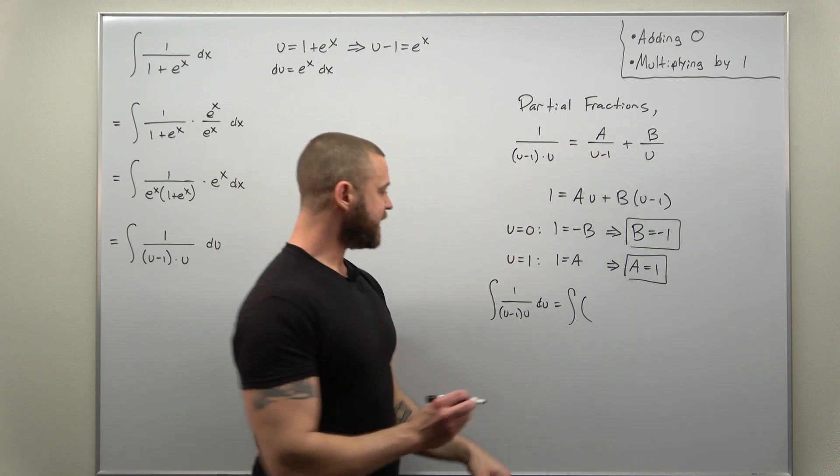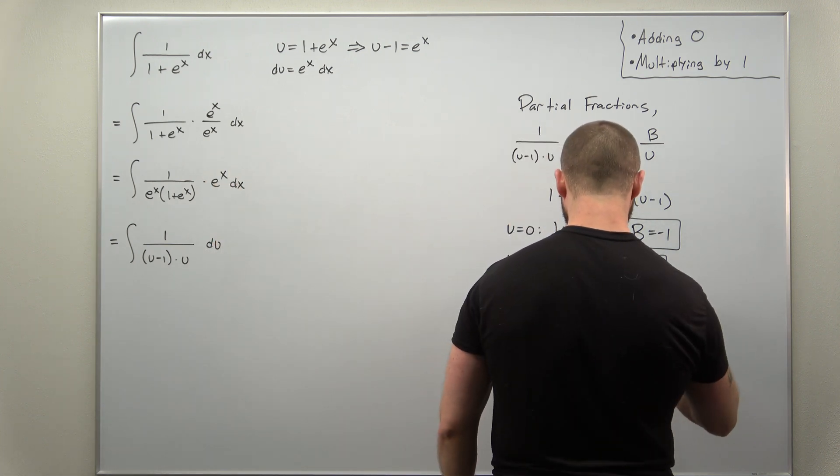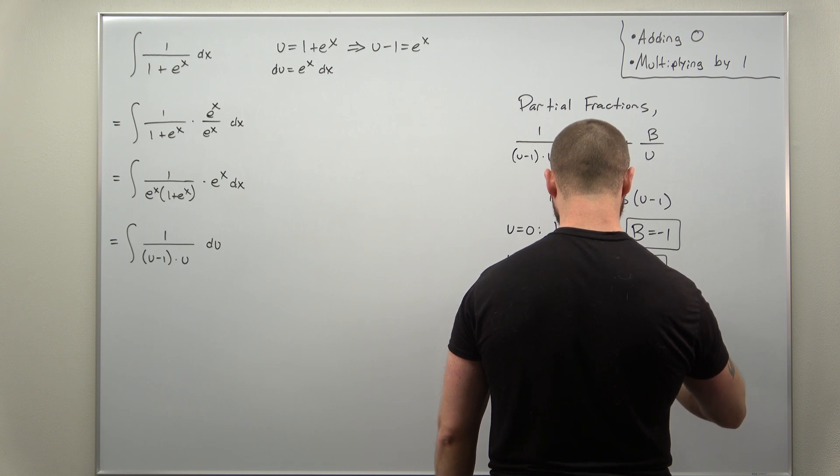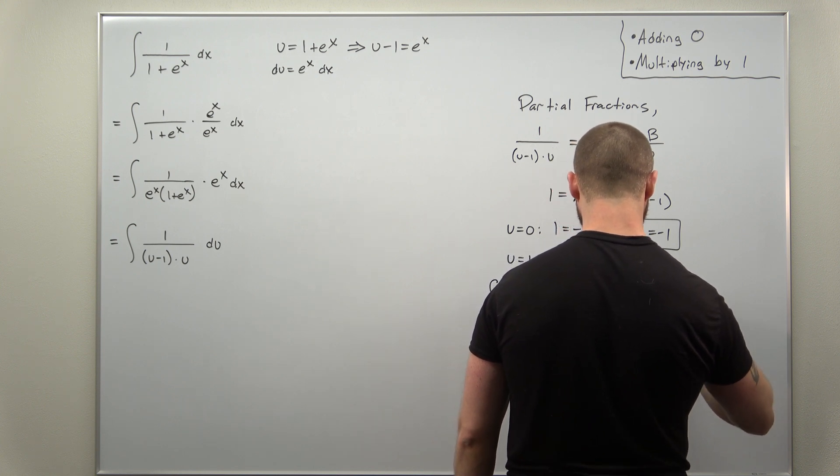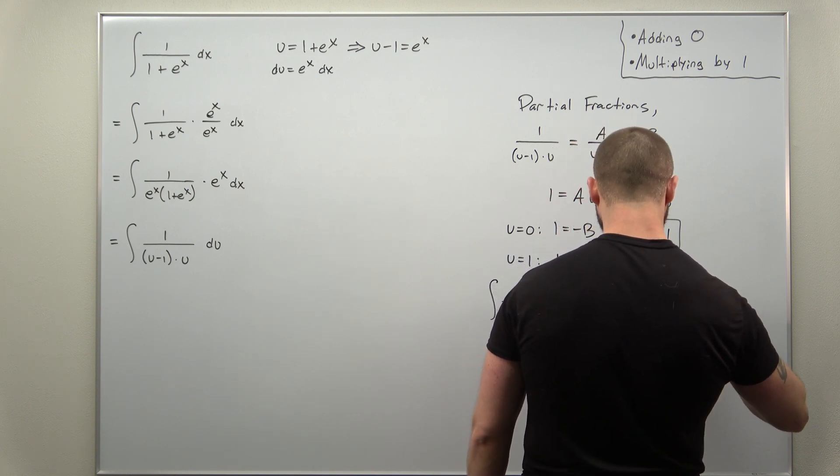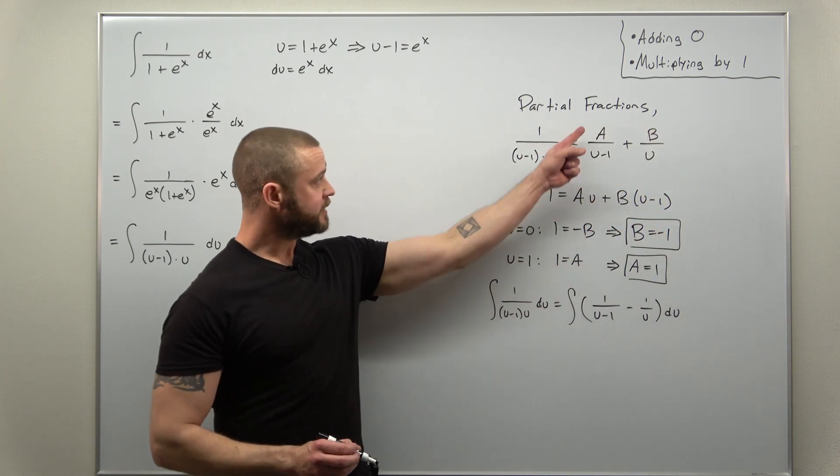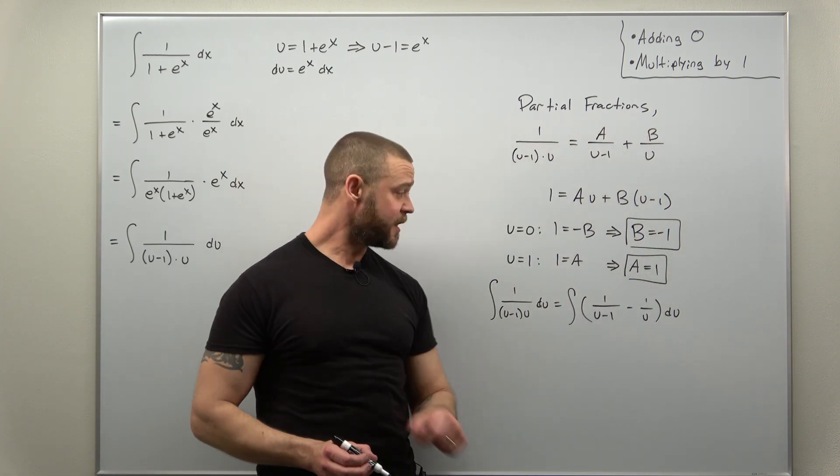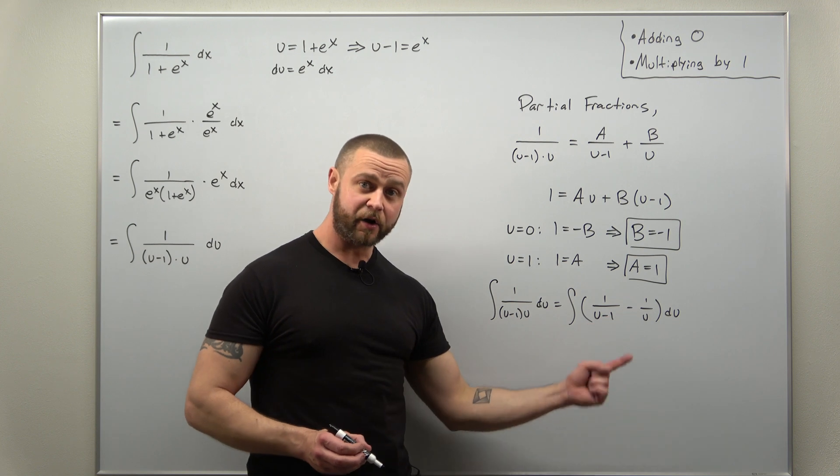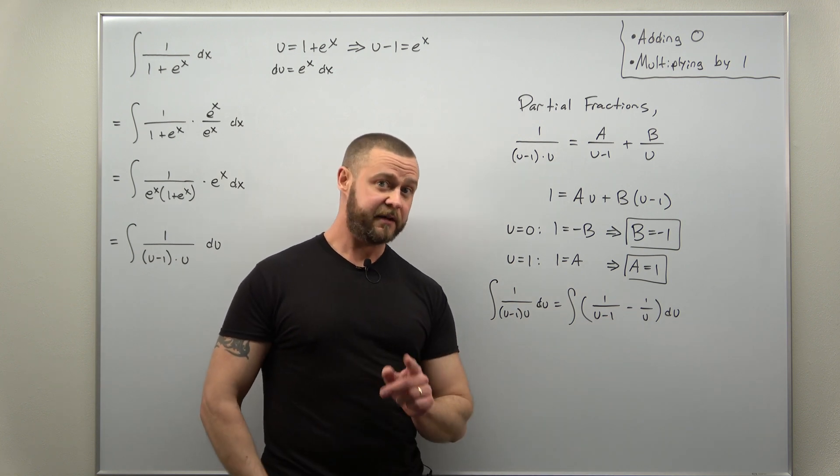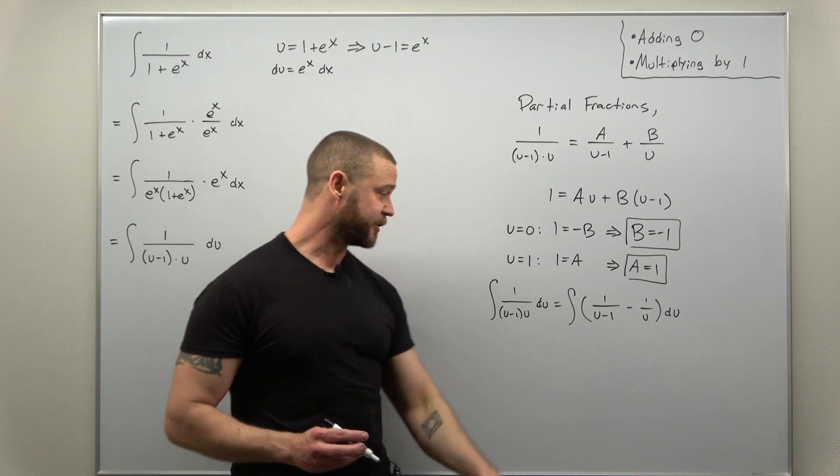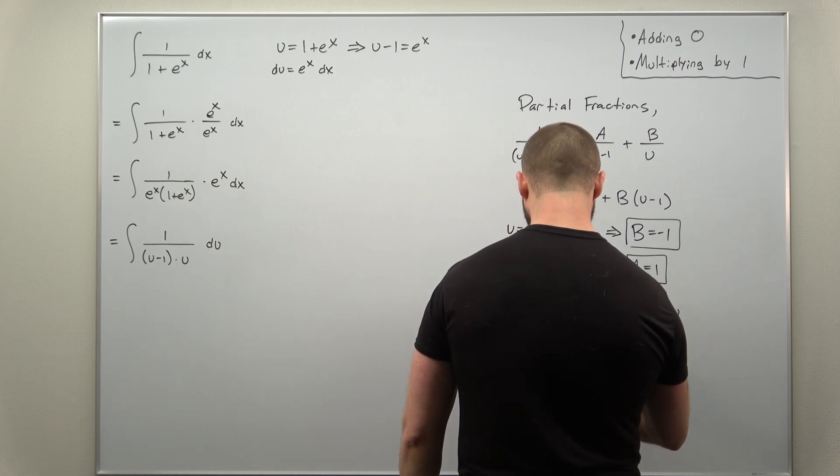A is one, B is negative one. We have this as now the integral of one over u minus one minus one over u, again just plugging in your values for A and B there. And we can easily integrate that. That should integrate to give us two different natural log terms, so looks like we should get natural log of u minus one minus natural log of u.